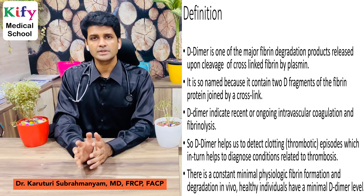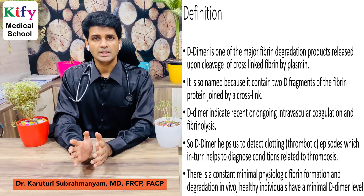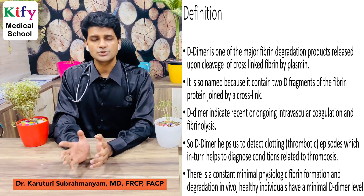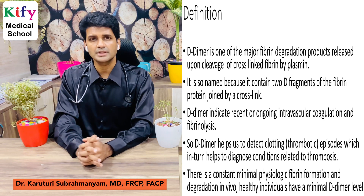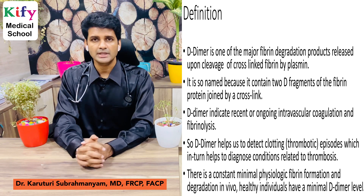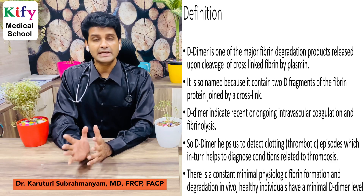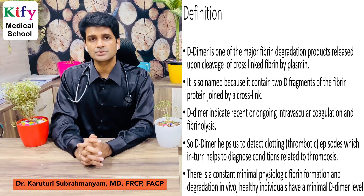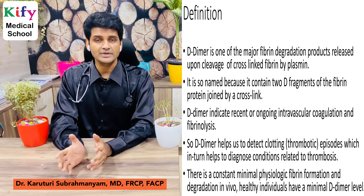D-Dimer is one of the major fibrin degradation products released upon the cleavage of cross-linked fibrin by plasmin. It is named because it contains two D-fragments of the fibrin protein joined by a cross-link. D-Dimer indicates recent or ongoing intravascular coagulation and fibrinolysis, and helps us detect clotting or thrombotic episodes, which in turn helps evaluate the disorders leading to thrombosis.